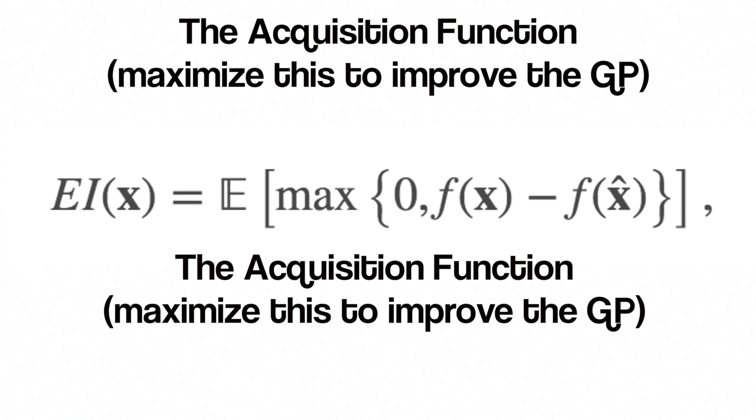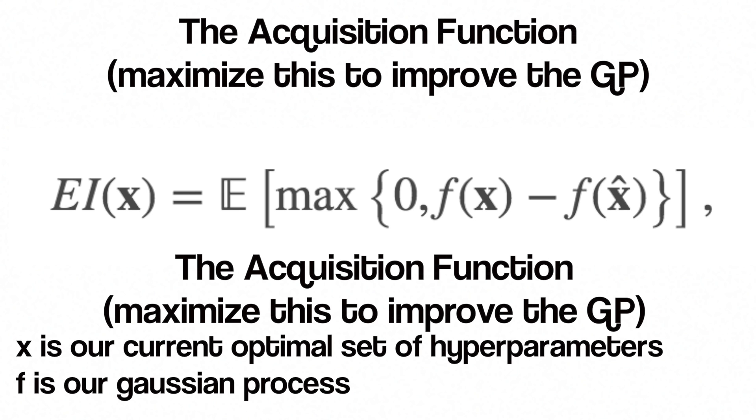The values that have the highest utility will be the values we compute the loss for next. We'll use the popular expected improvement function where x is the current optimal set of hyperparameters. By maximizing this, it will give us the point that improves on f the most. So, given the observed values f, we update the posterior expectation of f using the GP model. Then we find the new x that maximizes the acquisition function, the expected improvement. And finally, compute the value of f for the new x.